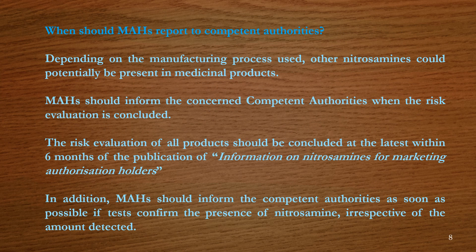When should MAHs report to competent authorities? MAHs should inform the concerned competent authorities when the risk evaluation is concluded. The risk evaluation of all products should be concluded at the latest within 6 months of the publication of information on nitrosamines for marketing authorization holders. In addition, MAHs should inform competent authorities as soon as possible if tests confirm the presence of nitrosamines, irrespective of the amount detected.